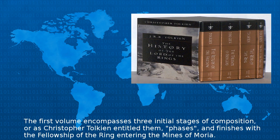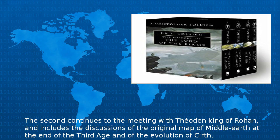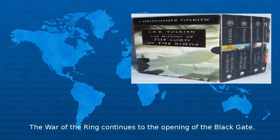The first volume encompasses three initial stages of composition, or phases as Christopher Tolkien entitled them, and finishes with the Fellowship of the Ring entering the Mines of Moria. The second continues to the meeting with Théoden, King of Rohan, and includes discussions of the original map of Middle-earth at the end of the Third Age and of the evolution of Cirth.